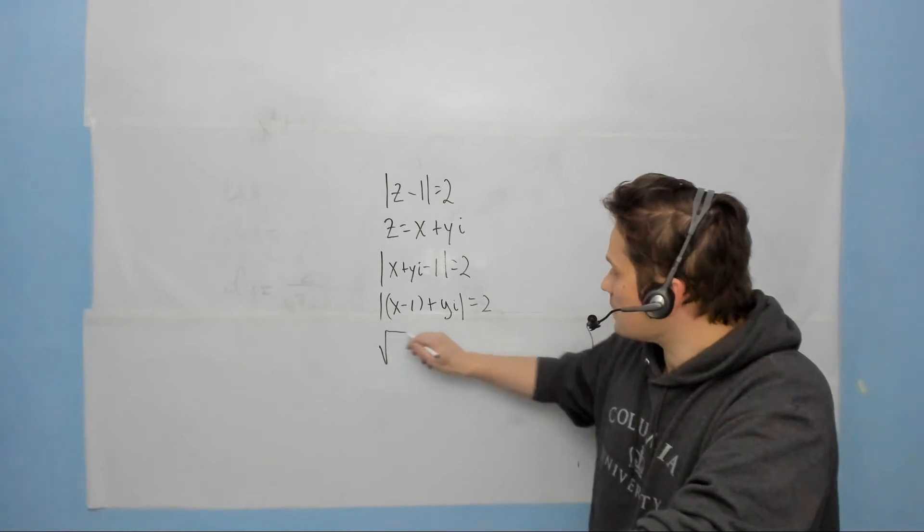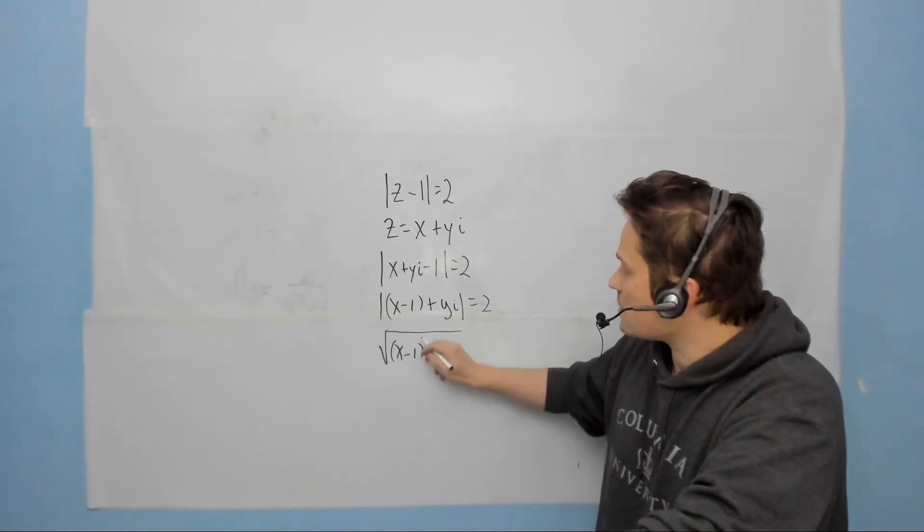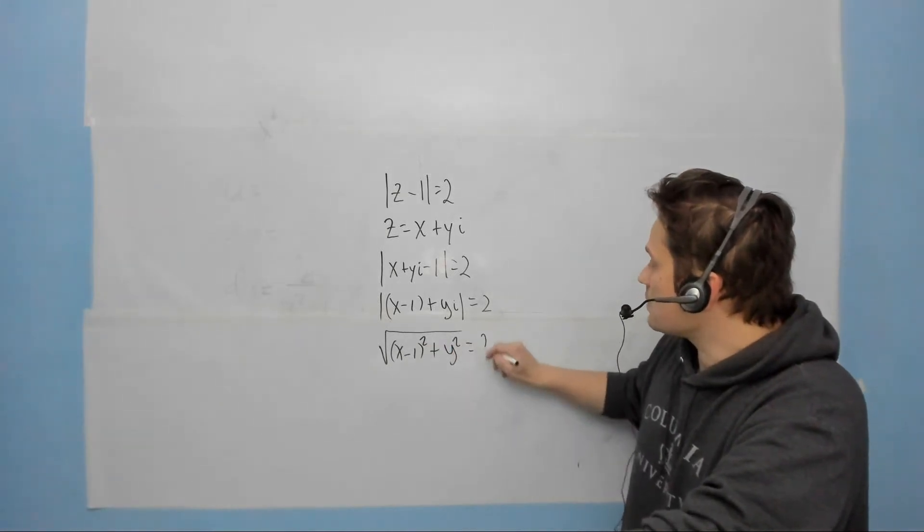So I'm going to do that next. I'm going to put the square root symbol, so this plays the role of this first entry: x minus 1 squared, plus, and then y squared. And the whole thing is equal to 2 still.